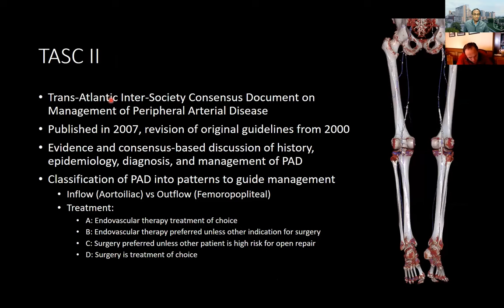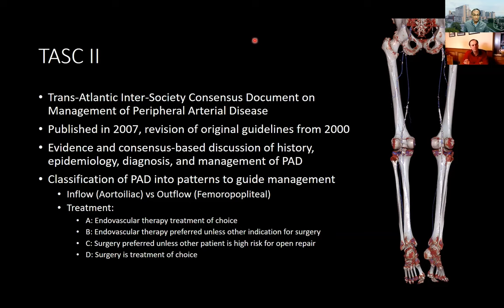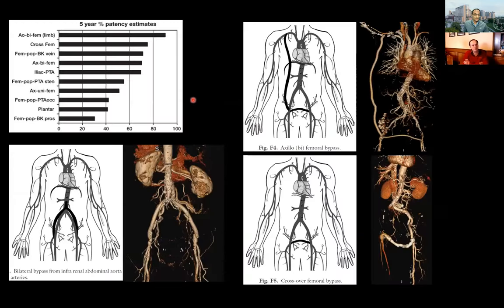TASC II — the Transatlantic Intersociety Consensus Document on Management of Peripheral Arterial Disease — published about 15 years ago, attempted to classify PAD into patterns to guide management, thinking about inflow disease (aorto-iliac) versus outflow disease (femoral-popliteal), and whether endovascular versus surgical therapy would be more appropriate. It didn't end up being followed quite as closely as hoped, and there's still controversy between surgical versus endovascular management, but some principles — inflow versus outflow, and looking at various types of bypasses — are still useful.